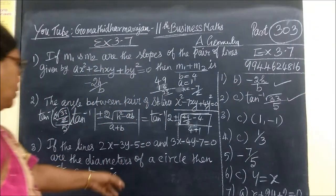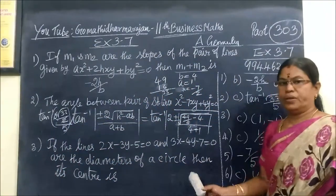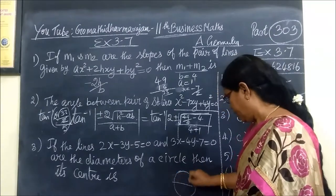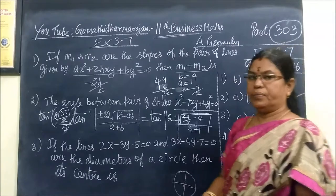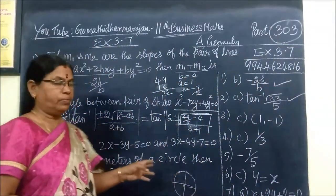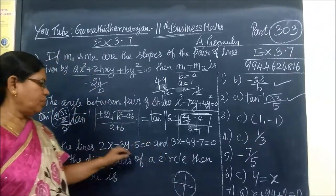If the two lines are diameters of a circle, the center is the point of intersection of the two diameters.